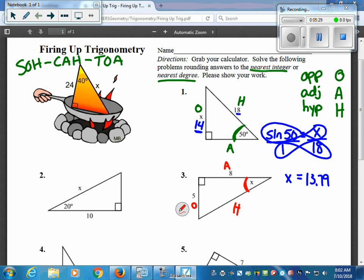So that means that the 5 is the opposite, and the 8 is next to or adjacent to that angle. So because I have measurements for O and A, which means this one's going to be tangent. Same setup, but I'm using tangent instead. Tangent of X equals 5 over 8.